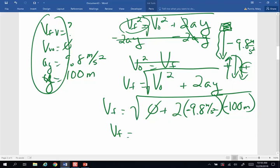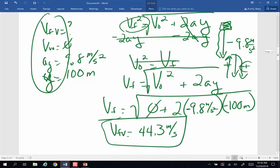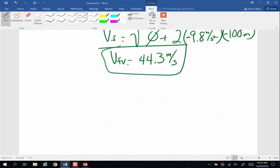Now when I do this and actually do the math, I am going to end up with 44.3 meters per second is final vertical velocity.